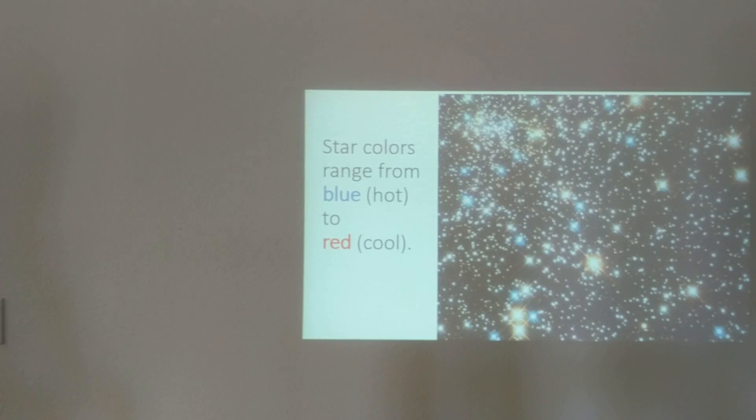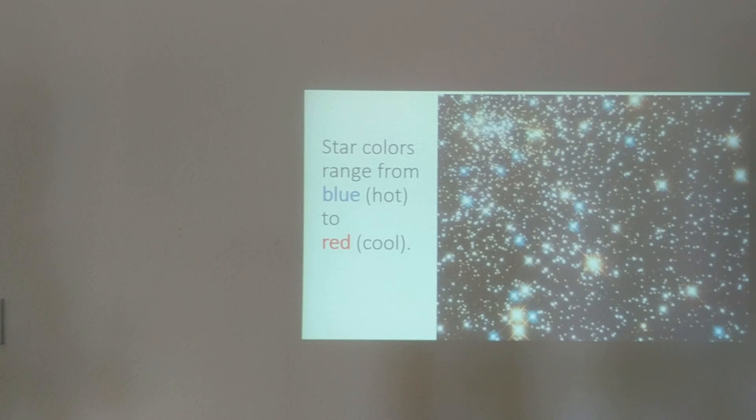However, if stars are peaking in the region of the green or yellow part of the spectrum, there's still a lot of red light and a lot of blue light in that spectrum. So the appearance is mostly yellow or a little bit yellowish white.